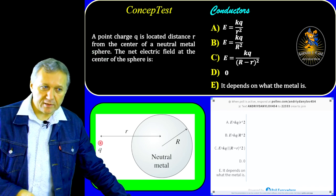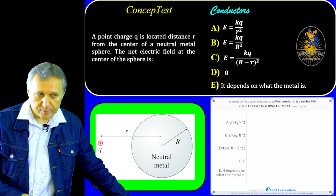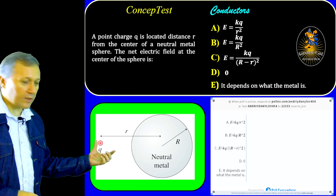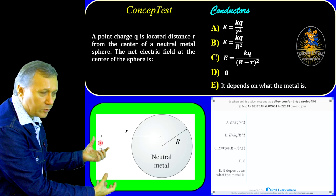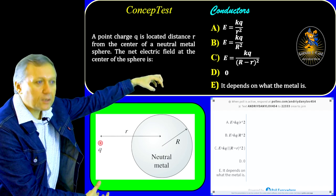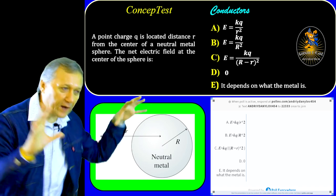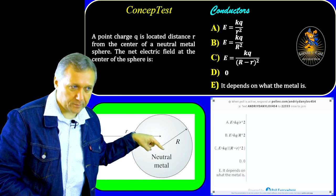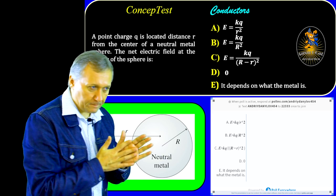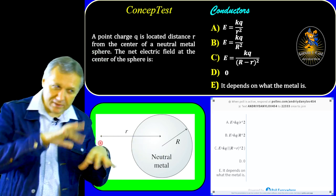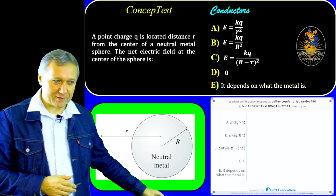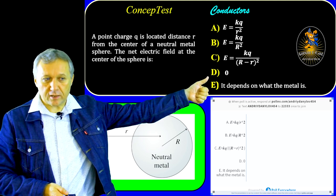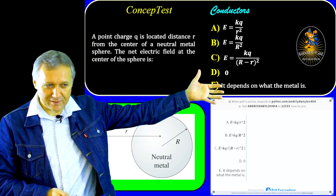Electrons, like brave soldiers, whenever they feel some external electric field penetrating inside the conductor, they start running and distributing themselves properly, and they never stop until they make the net electric field zero. At that moment, we say the conductor has reached electrostatic equilibrium. The option is D — electric field is zero. Remember that, because from time to time I give questions like this among multiple choice questions on exams.